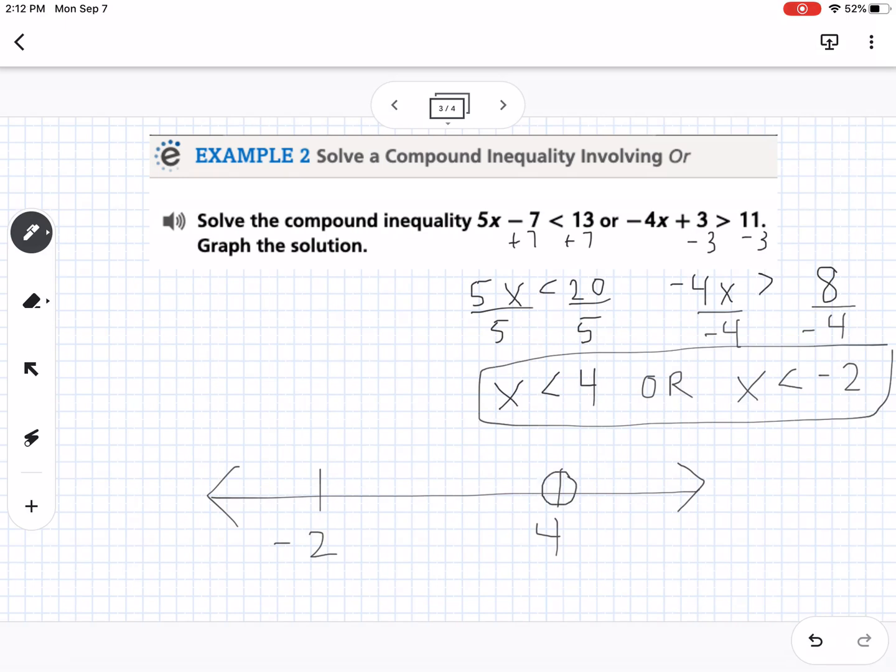So the first one says x is less than four. So I'm going to do an open circle on four and shade to the left. And then it says, or x is less than negative two. Well, here's the thing. Here's negative two.